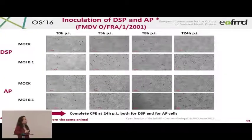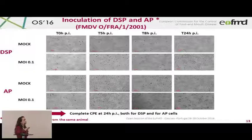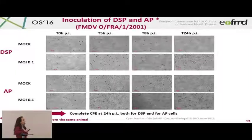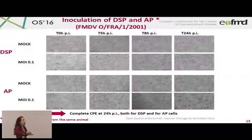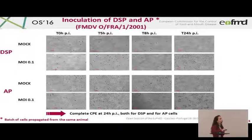We inoculated these cells with FMDV type O from the 2001 episode in France and the UK. We monitored cytopathic effect apparition over 24 hours, and as you can see, complete cytopathic effect was obtained at 24 hours for both DSP and AP cells. I note that we worked on a batch of cells propagated from the same animal.